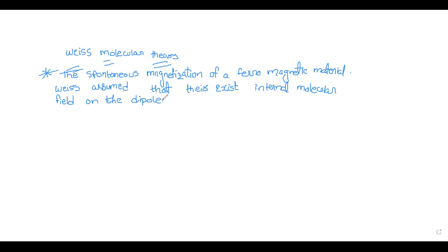According to Weiss, the internal molecular field is known as the Weiss molecular field. The internal magnetic field H_EX is a combination of the external applied field and the magnetization: H_EX = H + λM. This is equation number one.